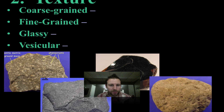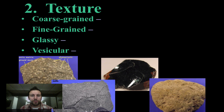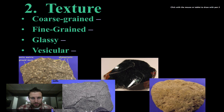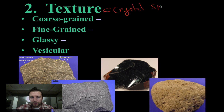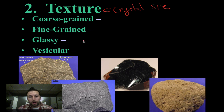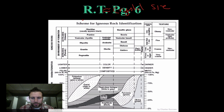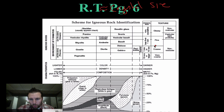We can also look at texture. Remember we were looking at texture before, having to do with crystal size. Texture is associated with crystal size. Coarse-grained, fine-grained, glassy, and vesicular are different types of texture based on crystal size or no crystals. For coarse-grained, let's flip back in the reference table and we can see that the crystals are 1 to 10 millimeters.